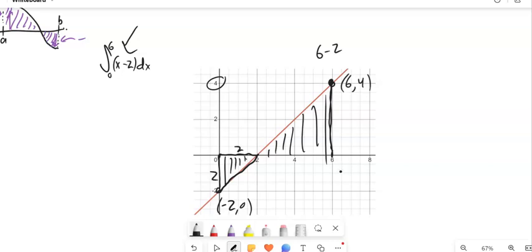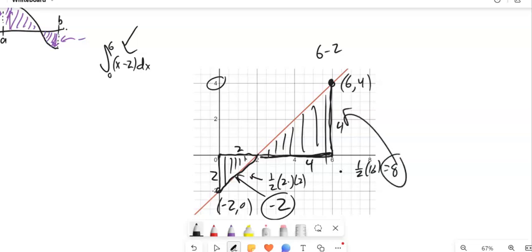So this is a distance of 2, this is a distance of 2. So this part would be one half times 2 times 2, which is 2. And since it's below, this part is negative 2. This distance from 2 to 6 is 4, this distance is 4. So one half times 4 times 4 is 8. That's a positive 8. So negative 2 plus 8 is 6. So the net signed area here is a positive 6, because this took out some of that.